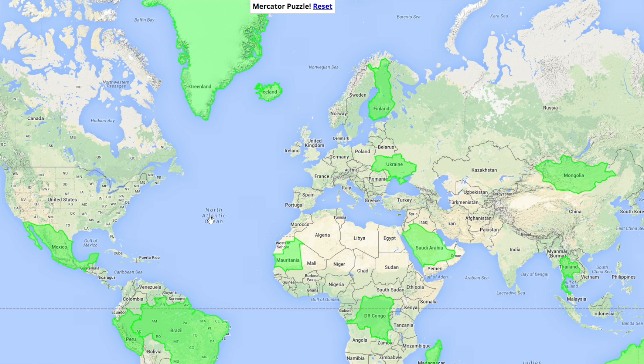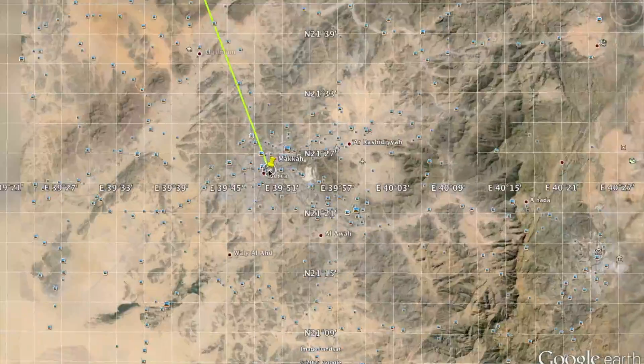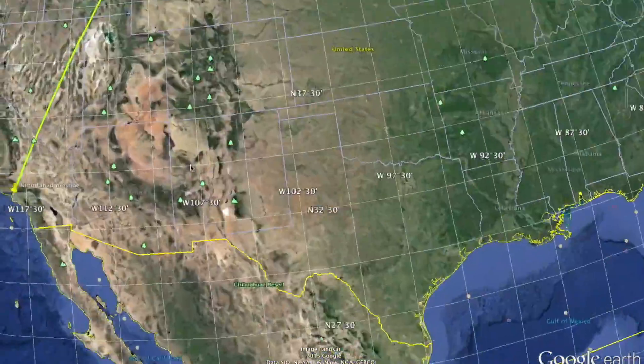So let's assume that we're in the US. Where would the direction of Makkah be? Most of us would say east or east-south, but if you check Google Earth, you'll find out it's northeast. Confusing, right? Here's the explanation.